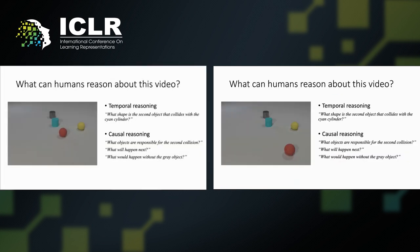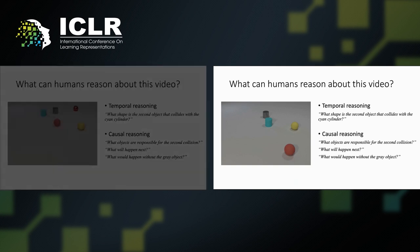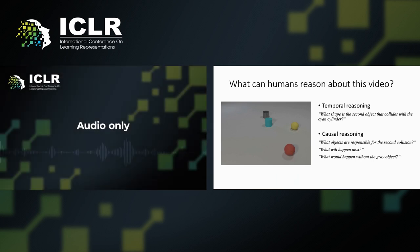When humans look at the video shown here, not only can we answer questions to describe the events that happen, but we can also reason about the causal structure behind the events, making predictions about the future, and imagining unobserved counterfactual scenarios. This naturally leads to the question: can machines perform causal reasoning tasks in the way that humans are capable of?